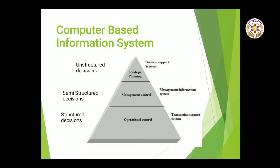Ab alag-alag management hai toh alag-alag decisions lene hote hain information produce karne ke liye. We have three types of decisions: unstructured decisions, semi-structured decisions, and structured decisions. Top management takes unstructured decisions, middle management takes semi-structured decisions, and the operational level takes structured decisions.